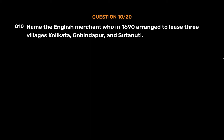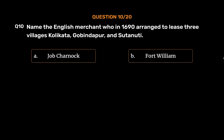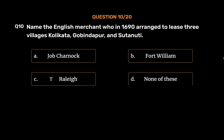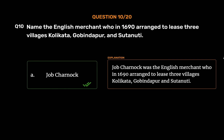Question 10: Name the English merchant who in 1690 arranged to lease three villages — Kolikata, Gobindpur, and Sutanuti. Options: A. Job Charnock, B. Fort William, C. Sir Walter Raleigh, D. None of these. The correct answer is Option A: Job Charnock, who was the English merchant who in 1690 arranged to lease these three villages.